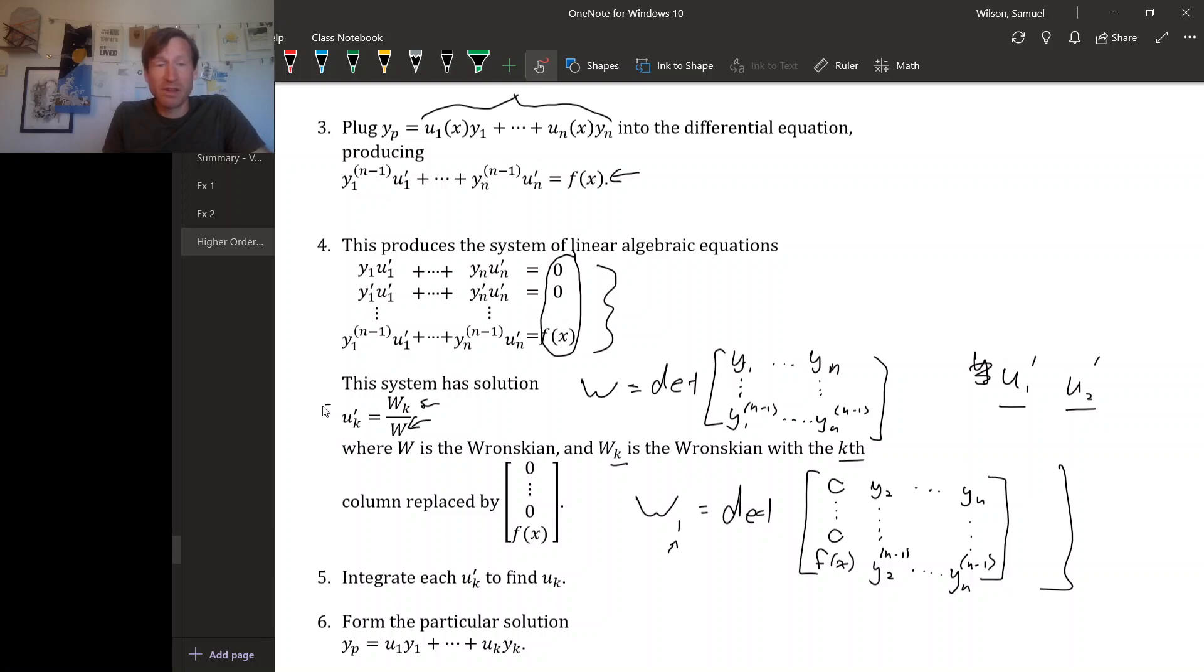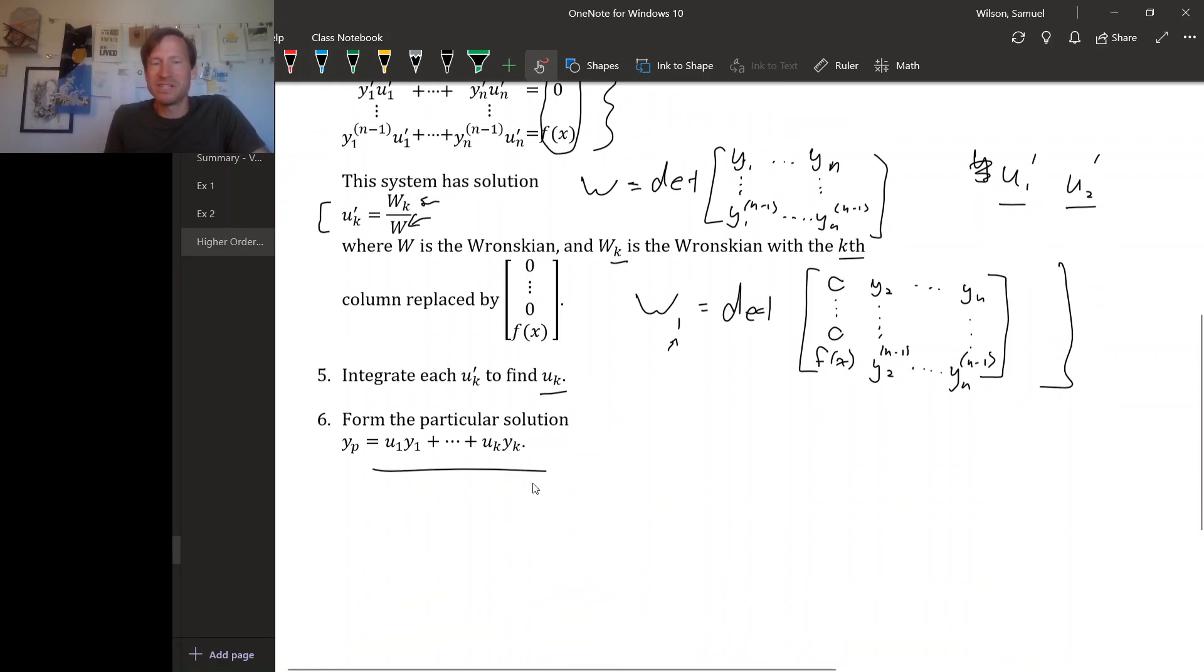Okay, so now we have a formula for all of the derivatives of all of the u's. So just integrate each one of them to find the u's themselves, and then you can form a particular solution. Of course, now that we have a particular solution, we already found the complementary solution. So then you can write the general solution to the linear inhomogeneous equation of order n.